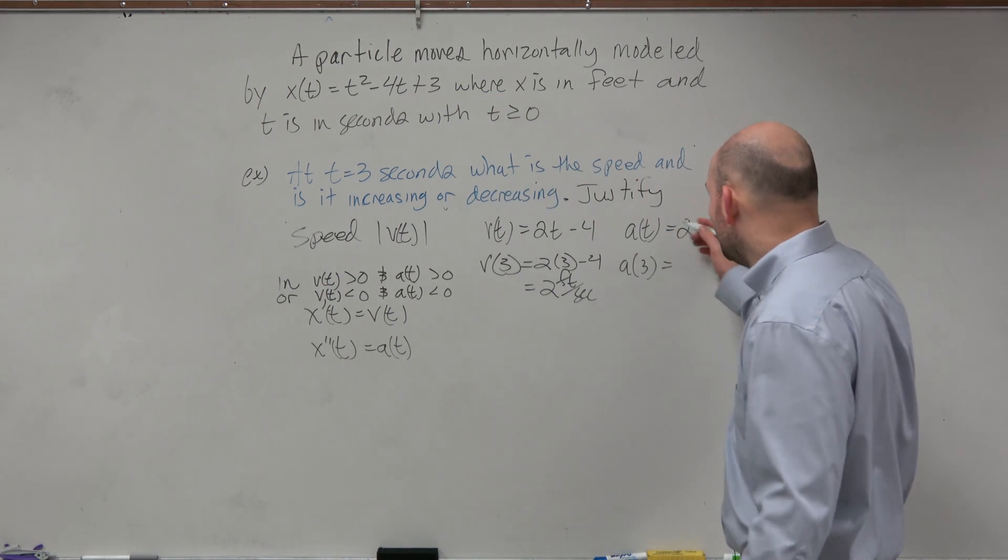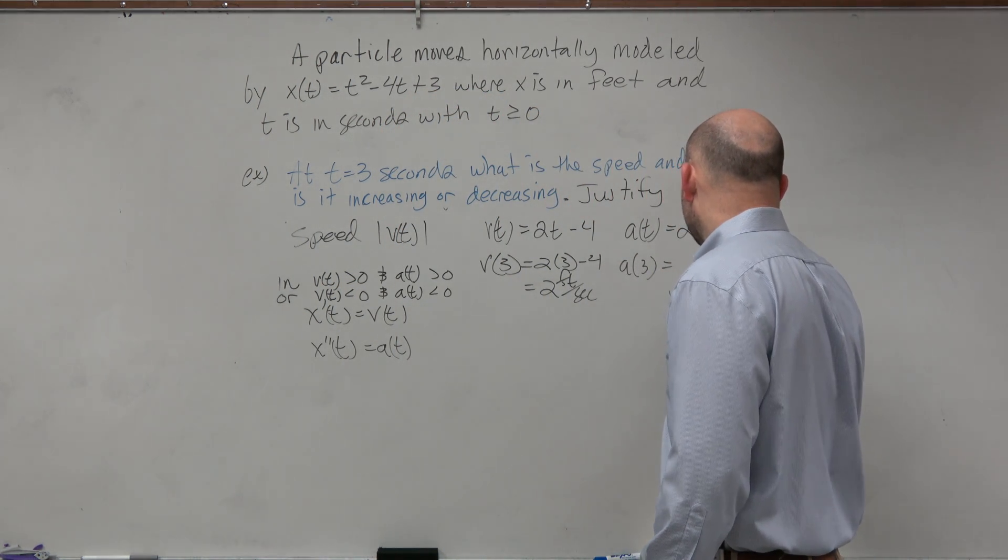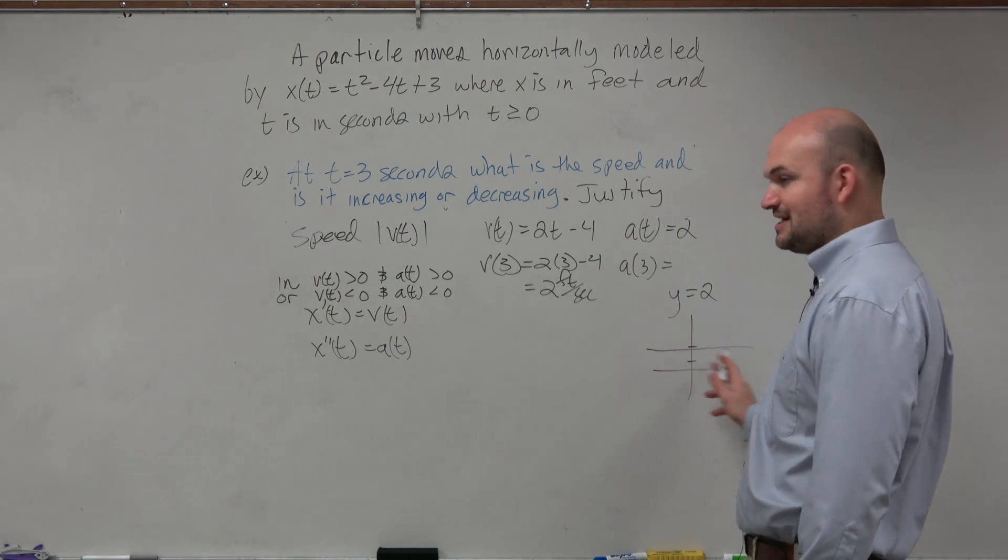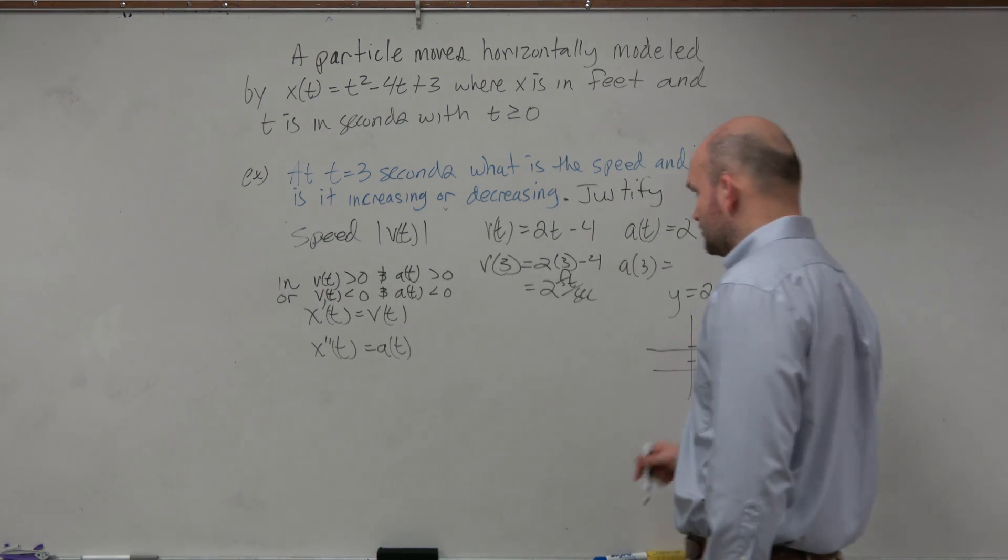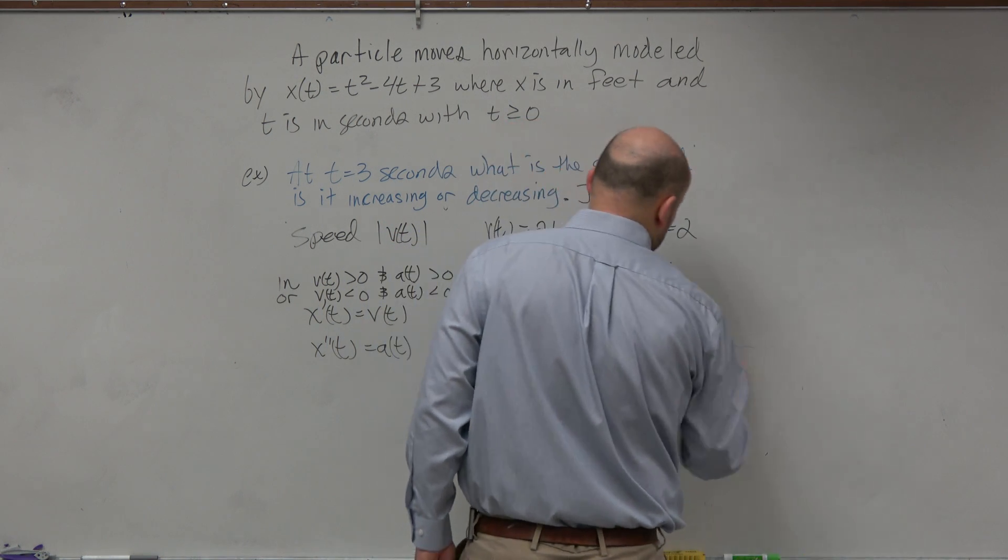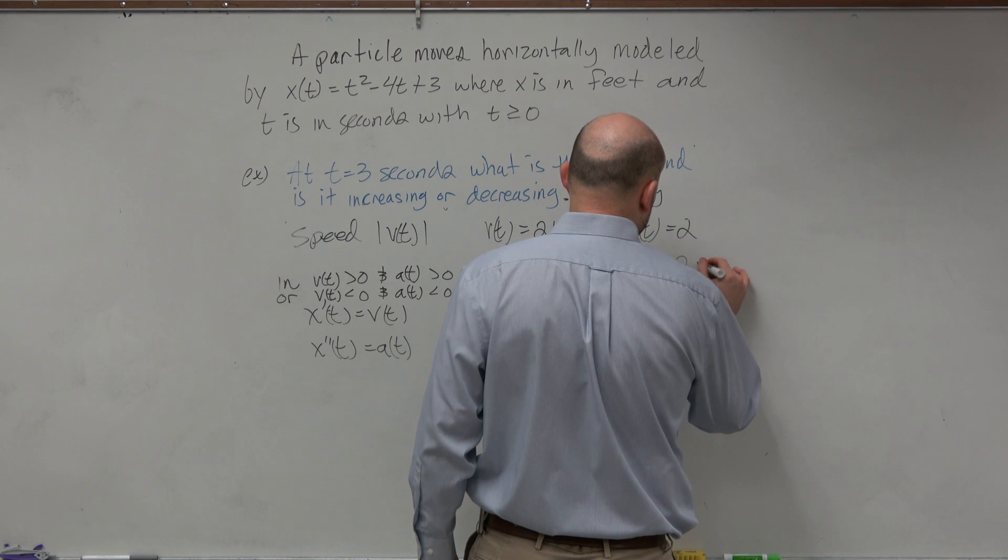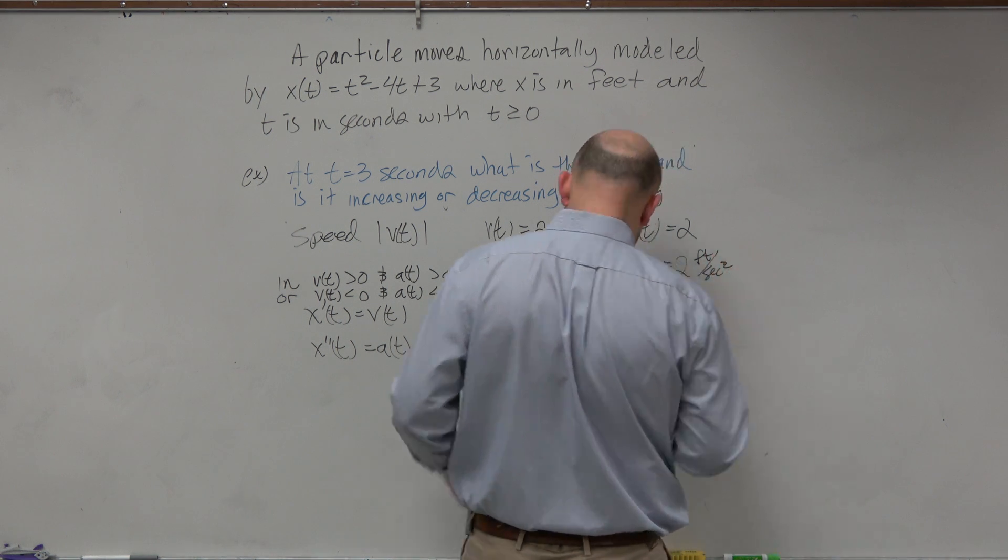Yeah, it just equals 2, guys. If you were to graph this as a line, y equals 2, it's just a solid line. So it doesn't matter what the x value is. The y value is always 2. So this is going to be 2 feet per second squared.